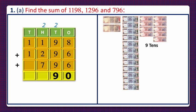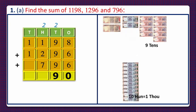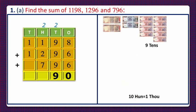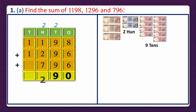Dear students, we now have 12 hundreds. Since 10 hundreds equals 1000, we'll take a 1000 rupee note instead of 10 hundreds. We're left with 2 hundreds, which we write in the hundreds column, and carry 1 to the thousands column. On counting the thousands, there are 3, so we write 3 in the thousands column.